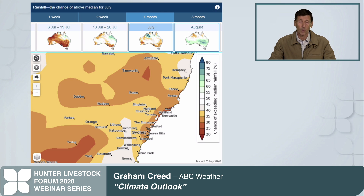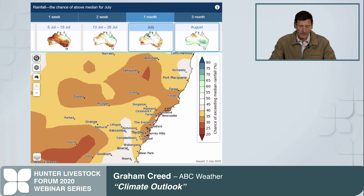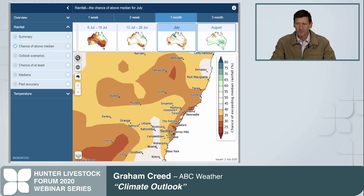You can zoom in to New South Wales or to the local region, and still look at expectations for the coming week, the next two weeks, the next month, or the next three-month outlook. It gives you a broad picture of what's going on through the atmosphere with regard to maximum temperature, minimum temperature, or rainfall. In July it has certainly started off dry but hopefully will end on the wetter side — particularly for New South Wales and the coastal areas. Once you zoom in, you can also play with the boxes on the left-hand side to look at the chance of above or below median rainfall, along with different outlook scenarios.